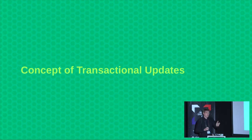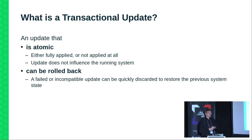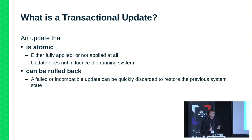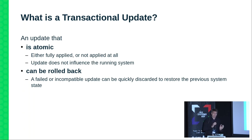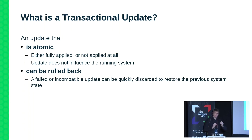So that's why transactional updates are there. Transactional updates are not a concept we invented — they can be defined across various distributions as follows. A transactional update is one that is atomic, meaning it's either fully applied or not applied at all. It must not influence the currently running system. And there has to be some option to roll it back — if it didn't do what was expected, you have to be able to restore your previous state.